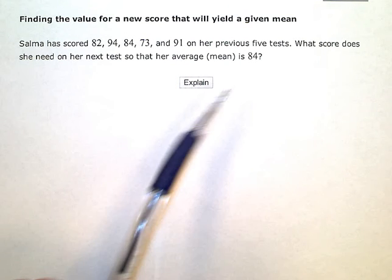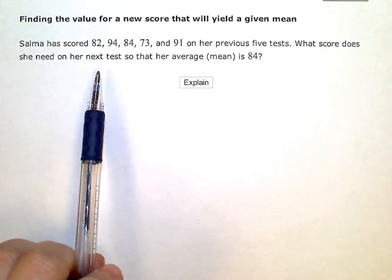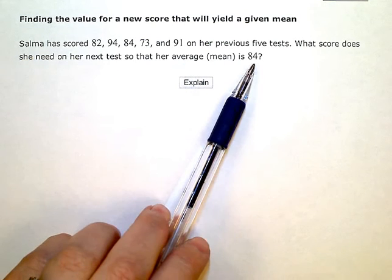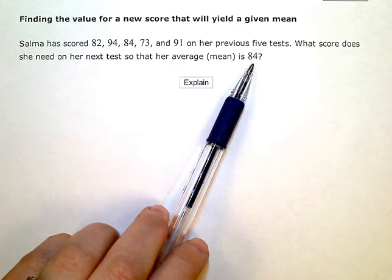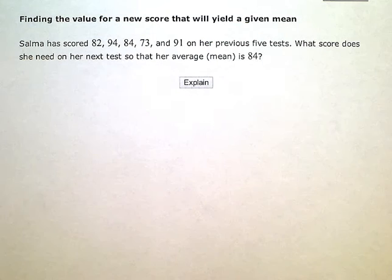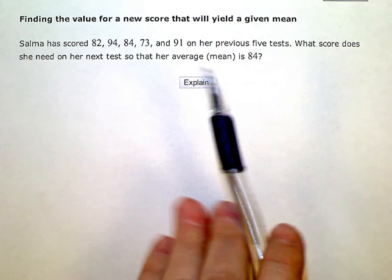What score does she need on her next test so that her average, or the mean, is 84? Okay, so she wants a B average on her test. This is what she has so far. She's trying to figure out what do I have to get on my next one to keep this average right here?